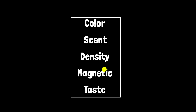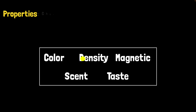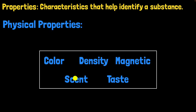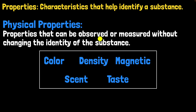That was fun. But the things we just used to differentiate between the different stuff — we give a name to that. We call them properties. So what exactly are properties? Properties are the characteristics that help identify a substance. We use color, density, and taste to identify specific substances. Properties can be of two kinds: physical properties and chemical properties. Physical properties are the ones that can be observed or measured without changing the identity of the substance.